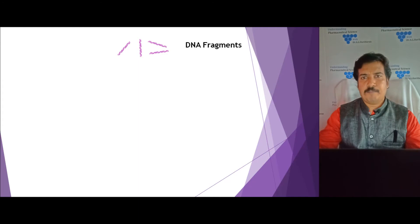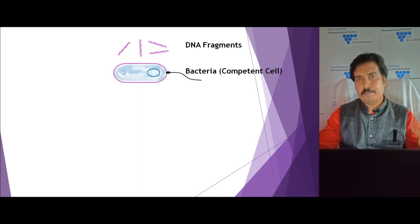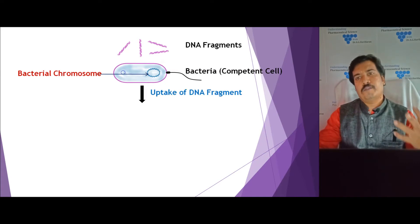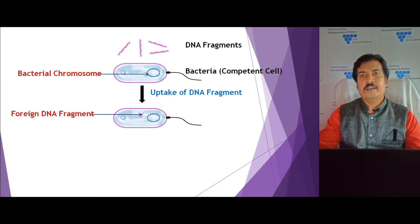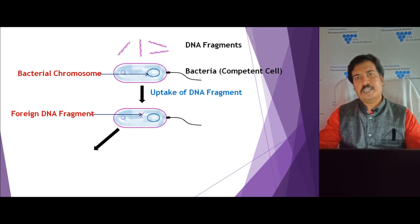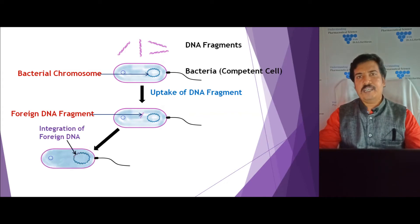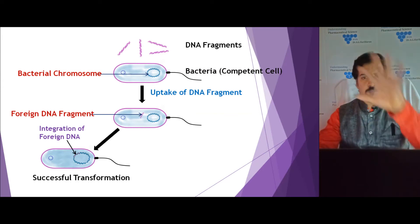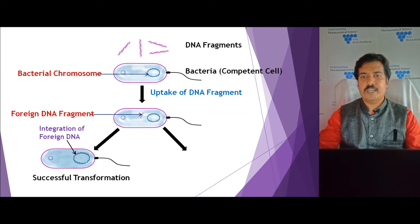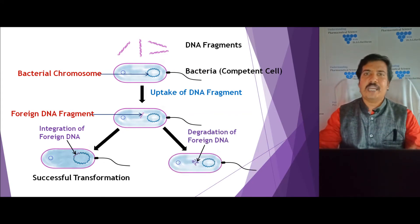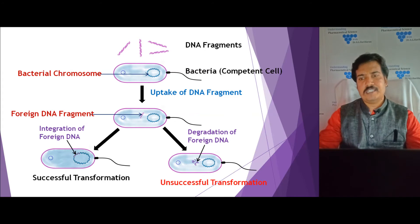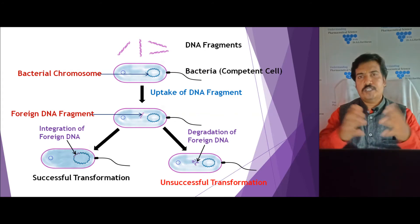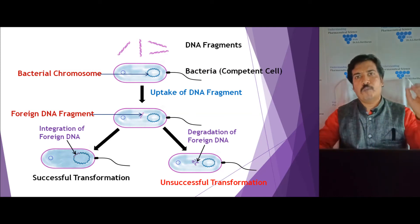As illustrated in the diagram, DNA fragments are present in the surrounding medium. A competent bacterial cell takes up the foreign DNA fragment. The double-stranded DNA enters in single-stranded form, aligns to the host chromosome, and gets integrated — this is a successful transformation. However, if the foreign DNA is degraded by the host cell's endonuclease activity, it is removed and this is considered an unsuccessful transformation. Successful transformation occurs in only one in one thousand competent cells.